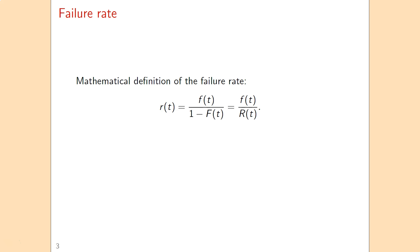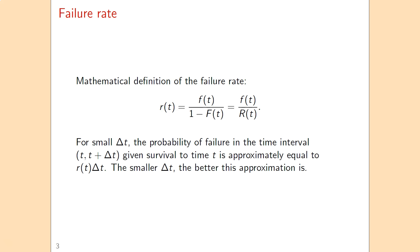The mathematical definition of the failure rate is the density function divided by the reliability function, or equivalently the density function divided by 1 minus the distribution function. That number can be larger than 1, so it's not immediately a probability. But if we multiply the failure rate by a small delta t, then we can interpret it as approximately the probability that failure happens in a time interval of length delta t. The smaller you choose delta t, the better this approximation becomes.